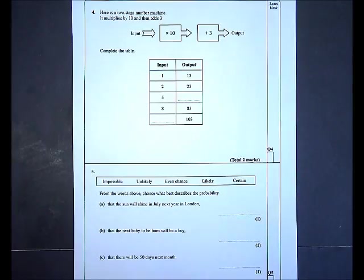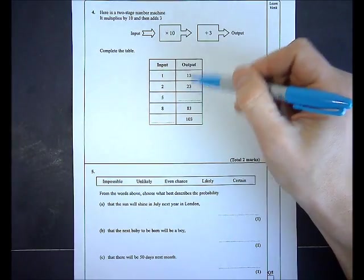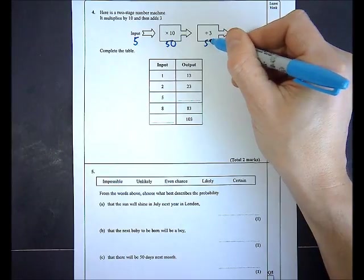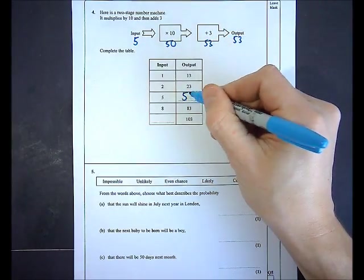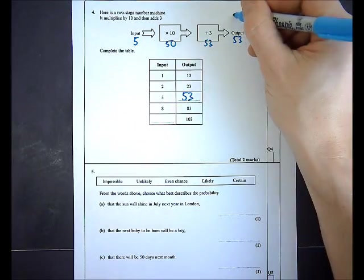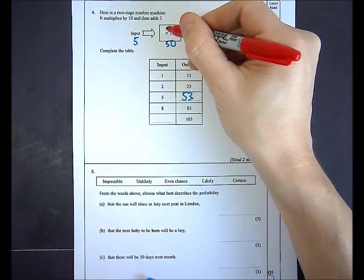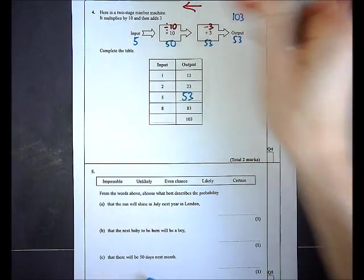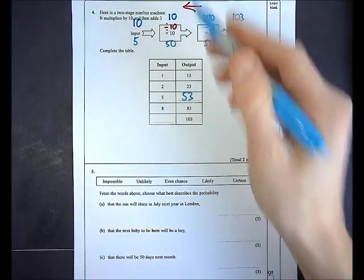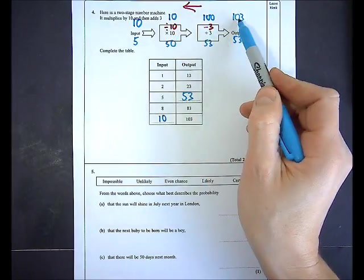Question 4 gives a two-stage number machine where the first operation is multiply by 10 and the second is add 3. For an input of 5: 5 times 10 is 50, add 3 gives an output of 53. For the reverse — finding the input when the output is 103 — I do the opposite operations: 103 minus 3 is 100, then 100 divided by 10 gives an input of 10. Checking: 10 times 10 is 100, add 3 gives 103. Correct.